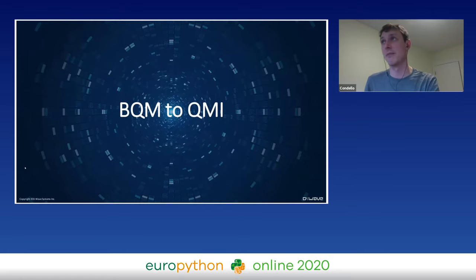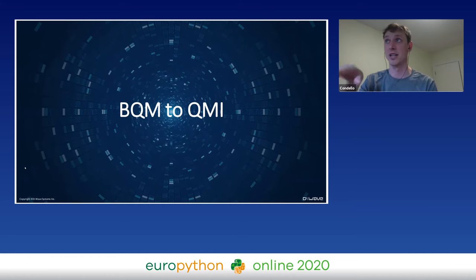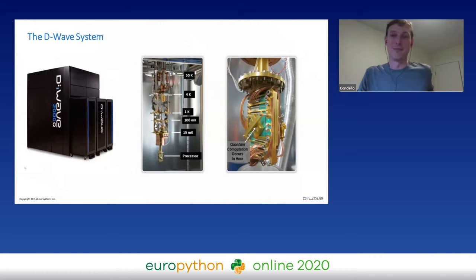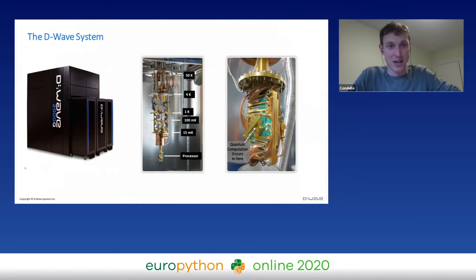A binary quadratic model is not quite a quantum machine instruction — you have to get from the BQM into something the quantum computer can understand. Inside our lab in Burnaby, outside of Vancouver in Canada, our systems look like big black boxes about the size of a mid-sized bathroom, with server racks on the front.